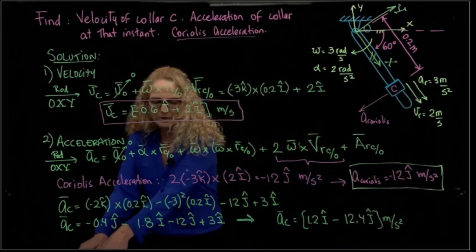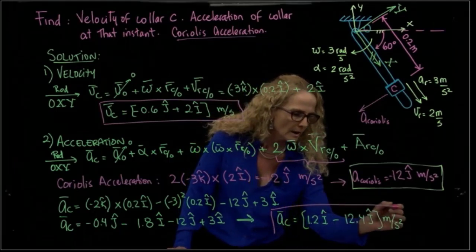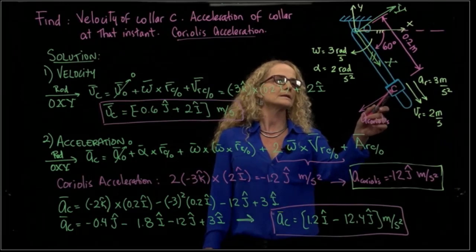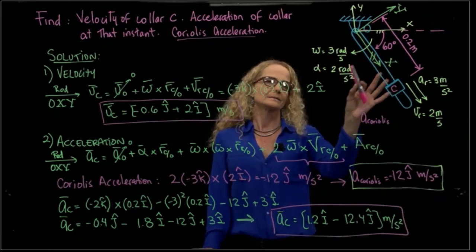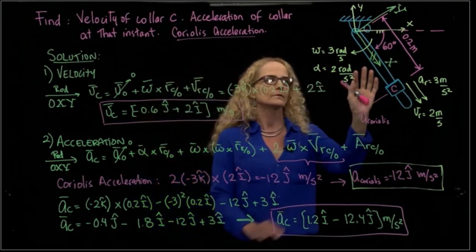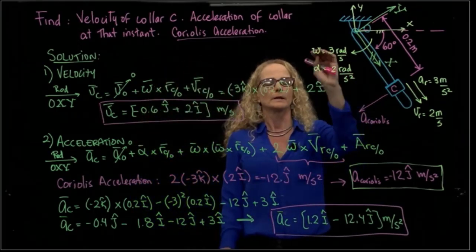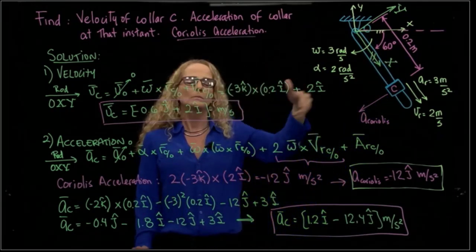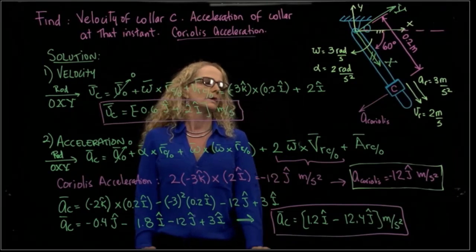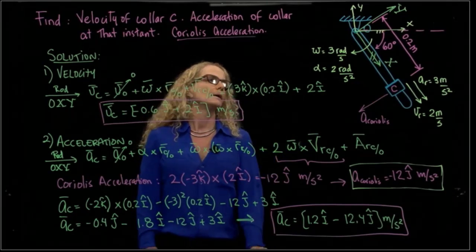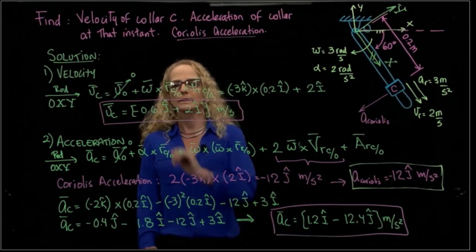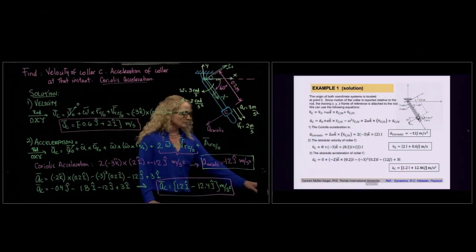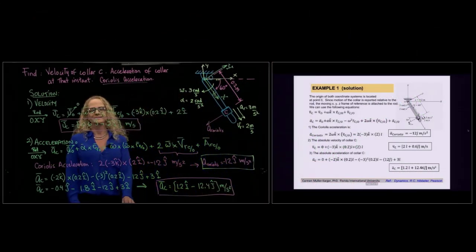As you see, we were able to calculate the absolute velocity and the absolute acceleration of coil C for one instance. This is very important to understand — this is like a picture of that instant where we are given the velocity and the acceleration at that position. If we want to find the whole motion we would need a general equation, but for that instant we were able to calculate the absolute velocity and the absolute acceleration. You can also see the solution in the PowerPoint presentation.